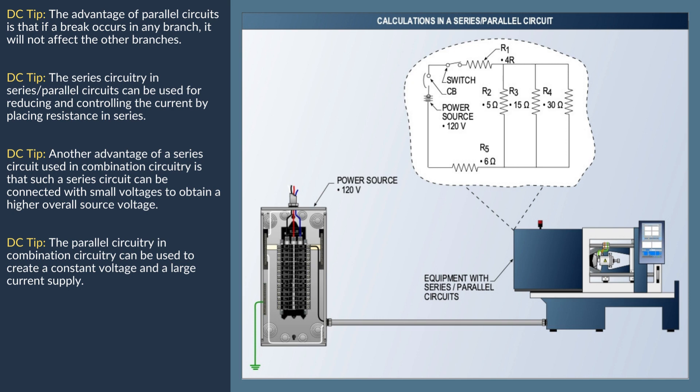In Step 1, finding total amps in the circuit: IT (total amperage) equals ET (total voltage) divided by RT (total resistance). Based on the formula, IT equals 120 volts divided by 13.33 ohms, which equals 9 amps. Therefore, the total amps in the circuit is 9 amps.